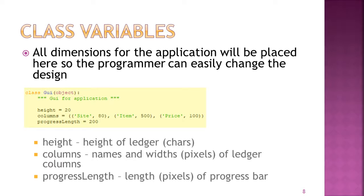Our class variables will hold all the dimensions of the application — something you might want to play with. Height equals 20 characters. For ledger columns: site is 80 pixels wide, item is 500 pixels wide, and price is 100 pixels wide. Note that height is in characters while columns are in pixels. The progress bar length is also in pixels — 200 pixels wide.